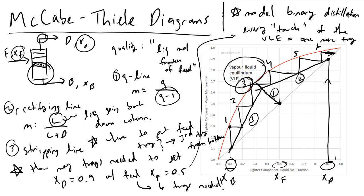That wraps up the introduction to McCabe-Thiele diagrams. In future videos, you can learn more about reflux ratios and boil-up ratios, which dictate the slopes of the rectifying and stripping lines. On exams, you'll often be given completed McCabe-Thiele diagrams and asked for bottoms composition, feed composition, distillate composition, or feed quality. You can find these simply by reading the X values from the Q line, rectifying line, and stripping line respectively.